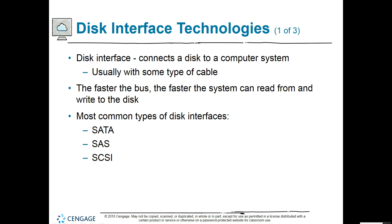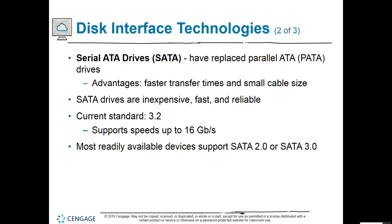Disk interface technologies include SATA, SAS, and SCSI. PATA is also noted, but Server 2016 is not compatible with PATA. SATA replaced PATA — the advantages are faster transfer times and a smaller cable size. PATA cables were ribbon-style, which could impact airflow through the system unit. The current SATA standard 3.2 supports speeds up to 16 gigabits per second, though most available devices support SATA 2 or SATA 3.